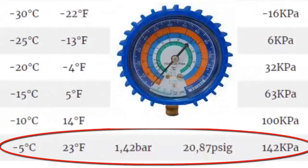3. To achieve a temperature of minus 5 degrees Celsius in the evaporator, equivalent to 23 degrees Fahrenheit, a low gauge pressure of 1.42 bars is needed, equivalent to 20.87 PSIG or 142 kilopascals.